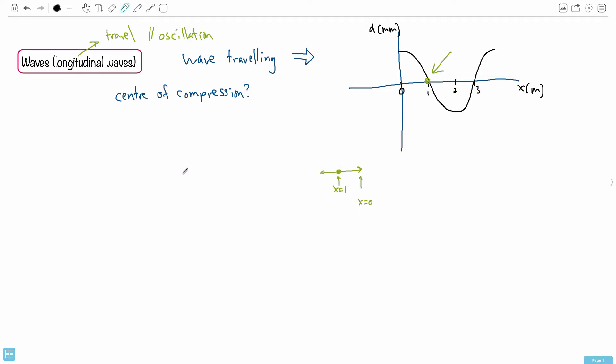So this particle, then, you could say it's at the center of the compression at B, which is when we say that X equals one meter. So that is what's important here. I thought it was a little bit tricky, actually. I don't think it's that simple.